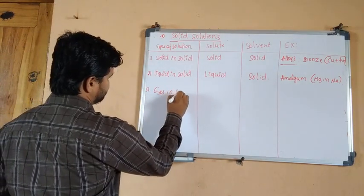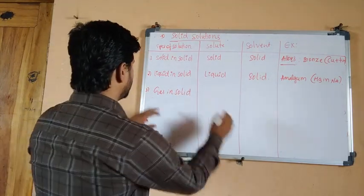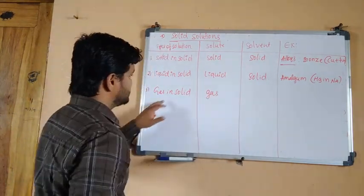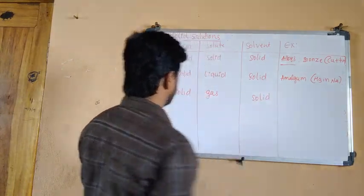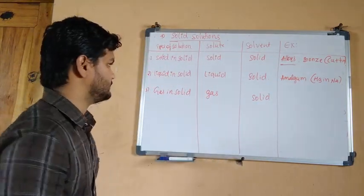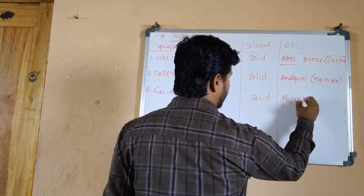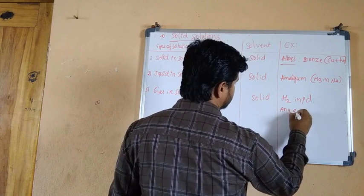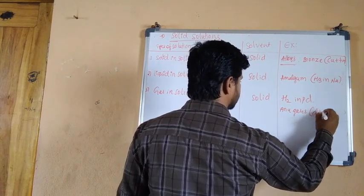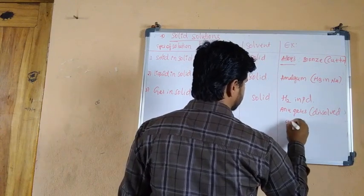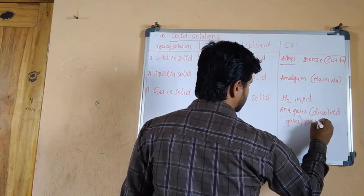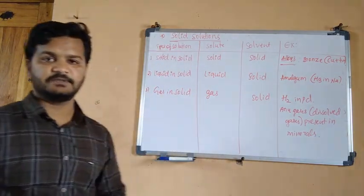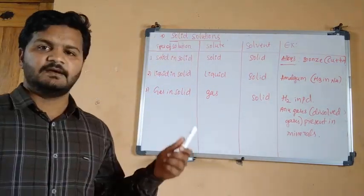The third type of solid solution is gas in solid — a gaseous solute in a solid solvent. Here, hydrogen gas is present in palladium metal, and dissolved gases present in minerals are also examples. This completes the first type: solid solutions. The second one is liquid solutions.